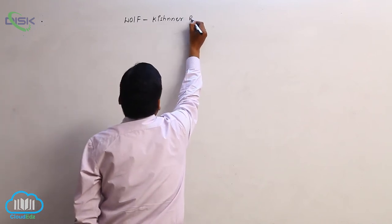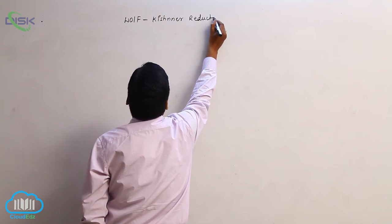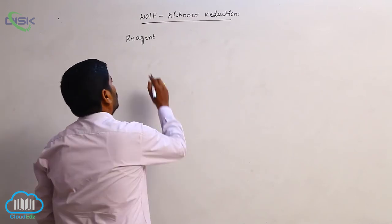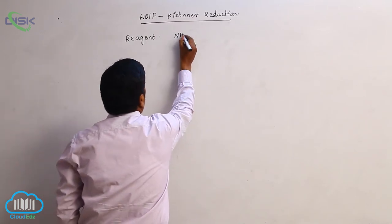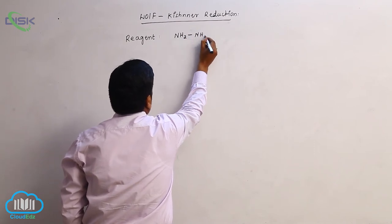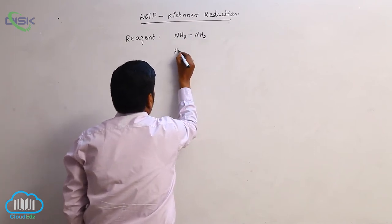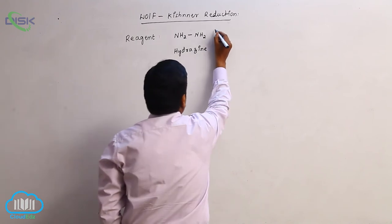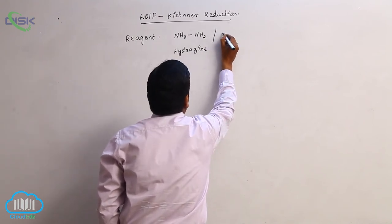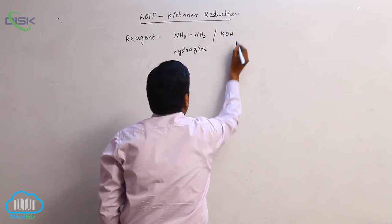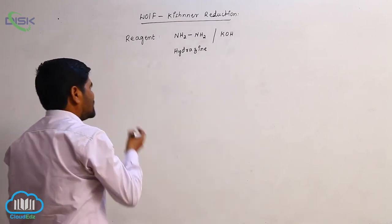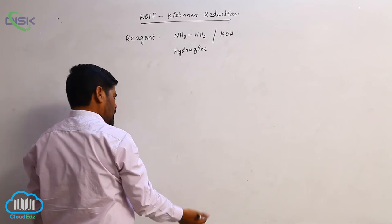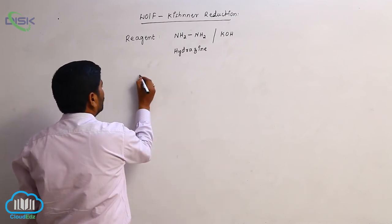Wolf-Kishner reduction reagent is NH2-NH2, this is known as hydrazine, in presence of potassium hydroxide or alkaline potassium hydroxide.